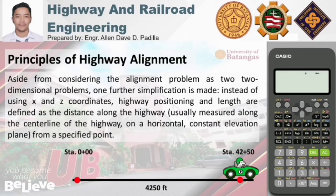But if we use the metric system, one station is usually equivalent to 1,000 meters. Meaning, if we are to determine the stationing of a point 4,250 meters from a specific point at station 0+000, its stationing would be 4+250.